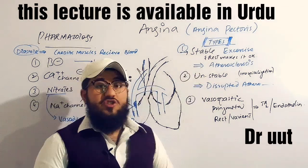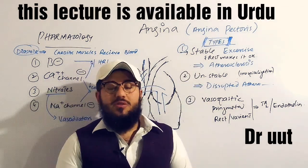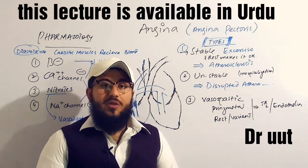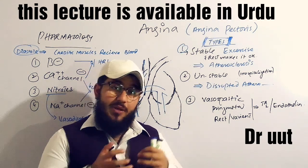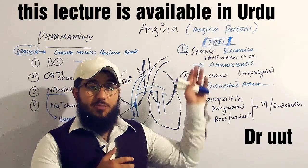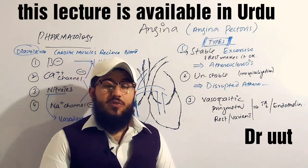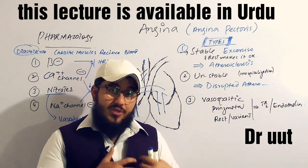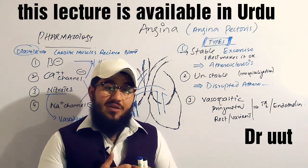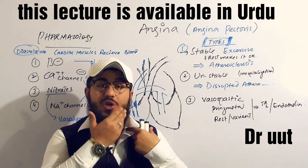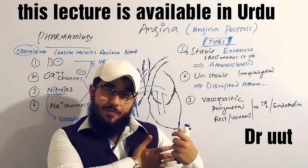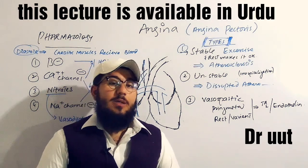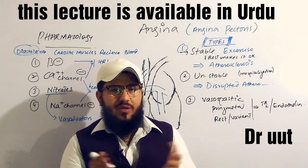Angina, commonly known as angina pectoris, is a Latin-derived terminology which means a severe type of pain in the chest. Angina stands for pain and pectoris stands for the chest. This severe type of pain observed in the chest may radiate into the neck, into the jaw, or towards the arm and the back. This pain is called angina pectoris, or simply angina.